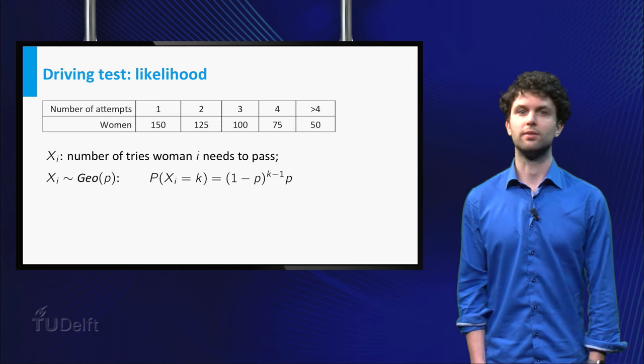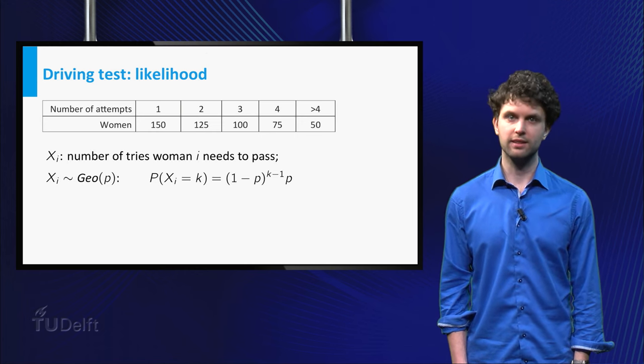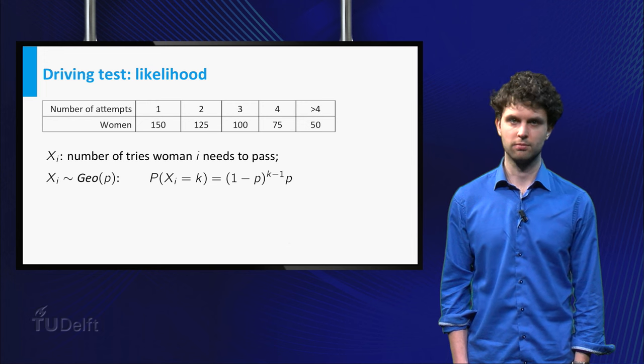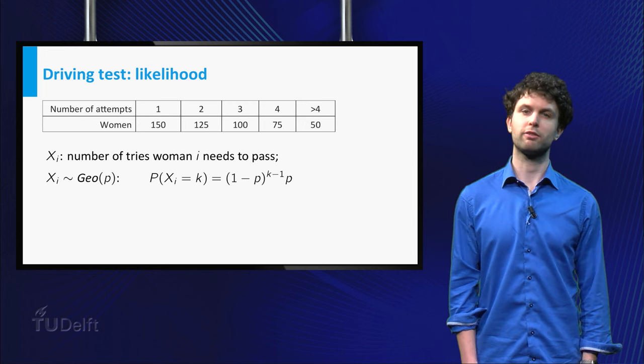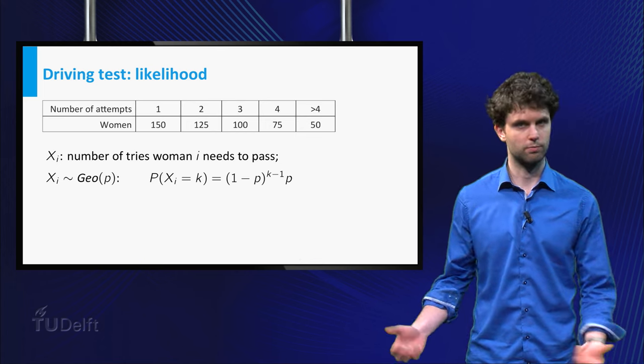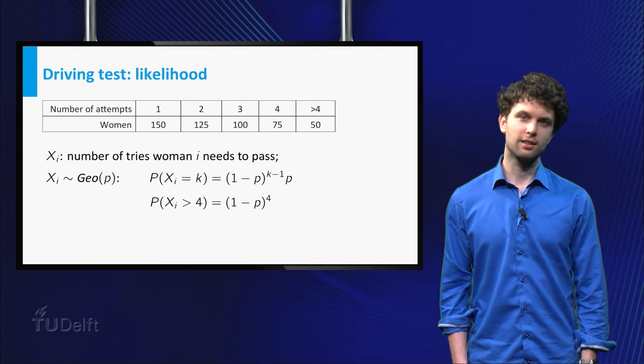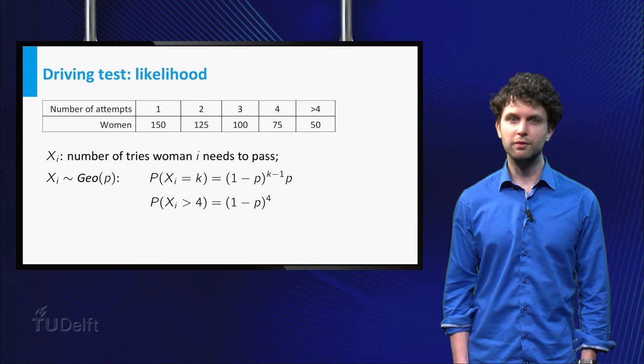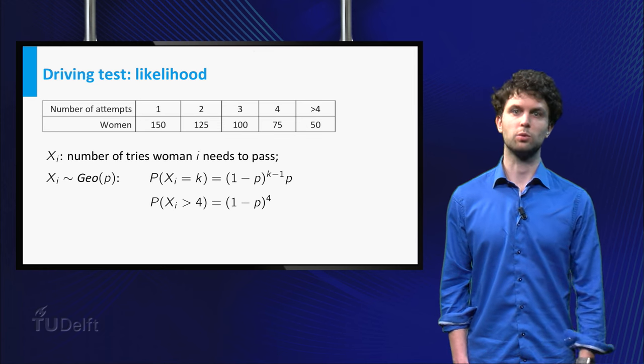Denote by Xi the number of tries that woman i needs to pass her driving test. Then all Xi have a geometric distribution, as already mentioned. In particular, the probability a woman needs at least 5 tries is 1 minus P to the power 4.